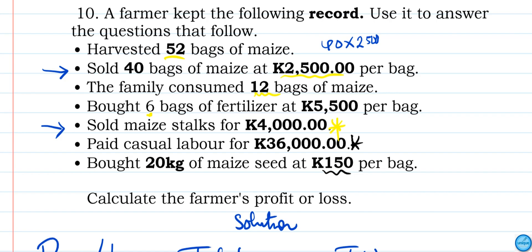The maize stalks sold for K4,000. So we will take this K4,000 and add it to that total income.